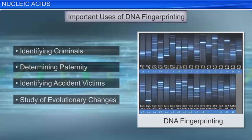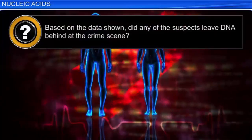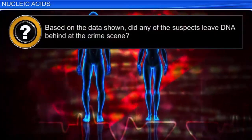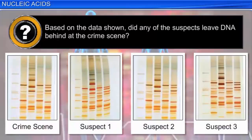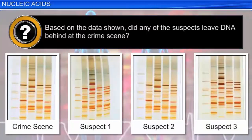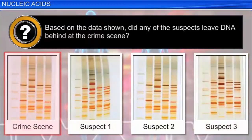Based on the data shown, did any of the suspects leave DNA behind at the crime scene? Based on the DNA fingerprinting, we can eliminate suspects 1 and 3, as their patterns do not match the DNA found at the crime scene. It seems likely that suspect 2 may have been at the crime scene.